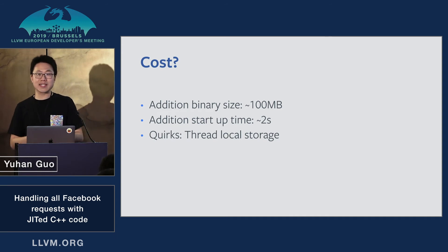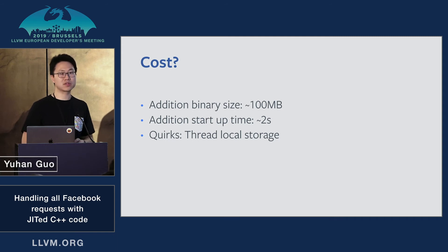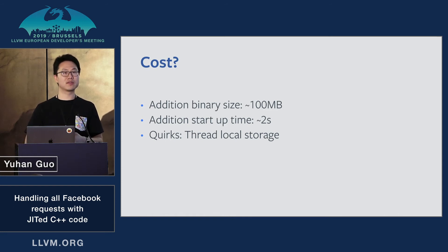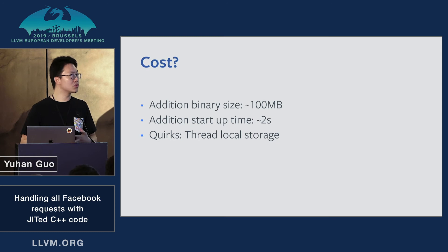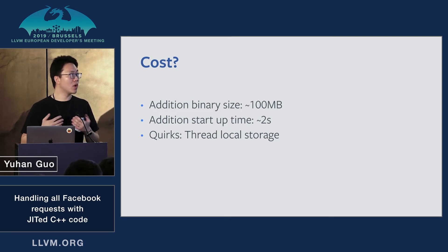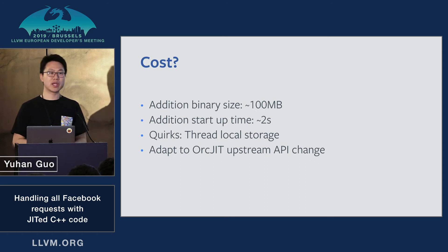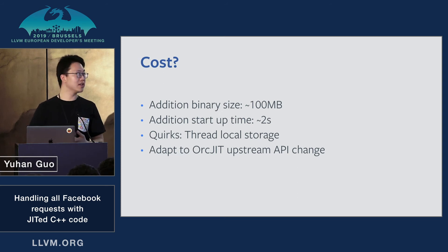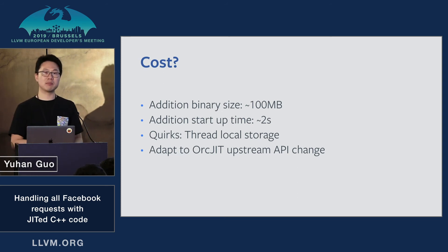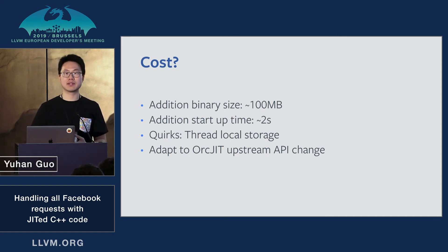We also have additional edge cases and quirks to deal with. For example, thread local storage: ORC JIT doesn't support thread local storage very well, and we're using emulated TLS, so we need hacky workarounds to translate external linkage to internal linkage with proper definitions. I mention that to say: if you want to take the same approach, there may be edge cases you need to handle. Last, we have to adapt to ORC JIT upstream API changes — I appreciate the continuous upstream support, but whenever the upstream changes, you need to monitor your build and sometimes fix compilation failures.